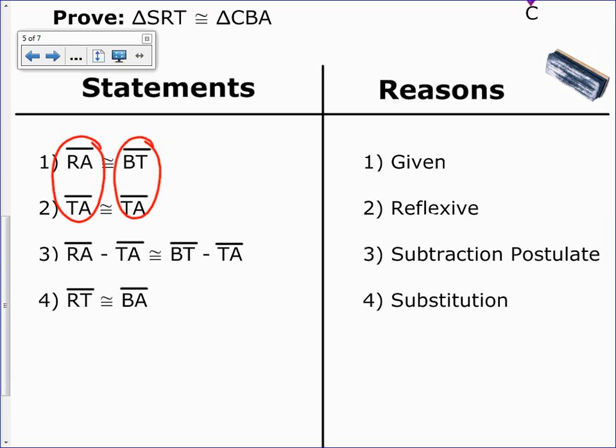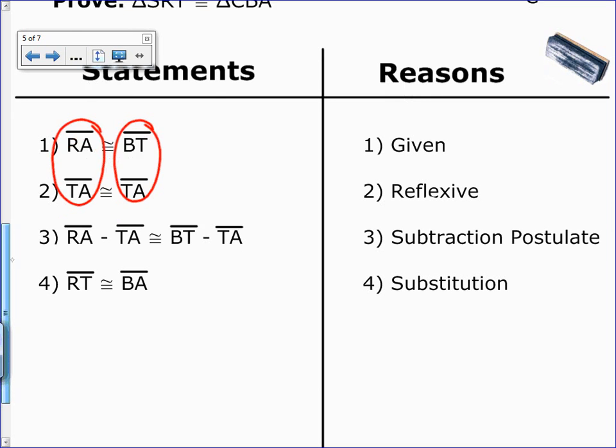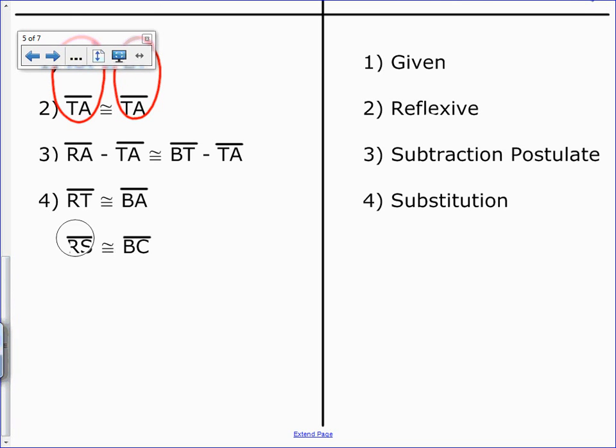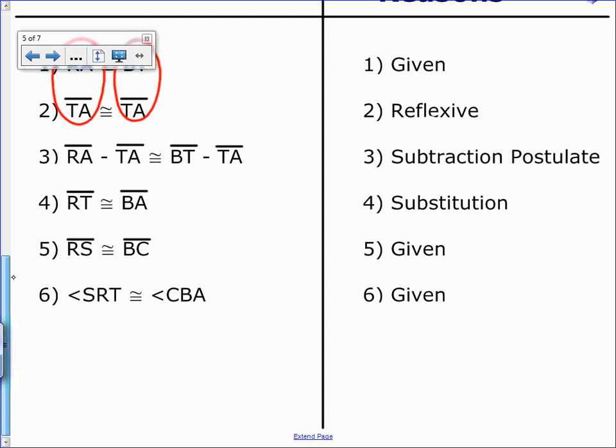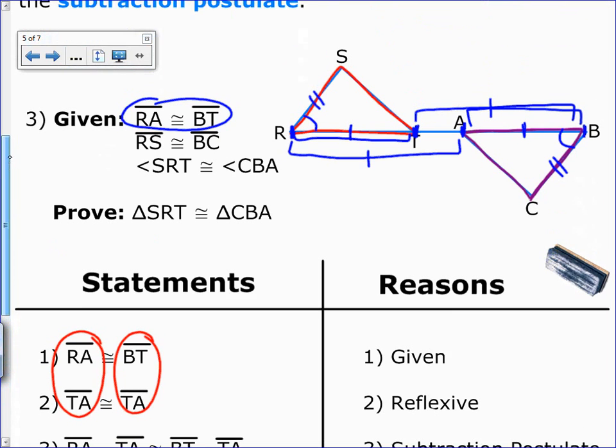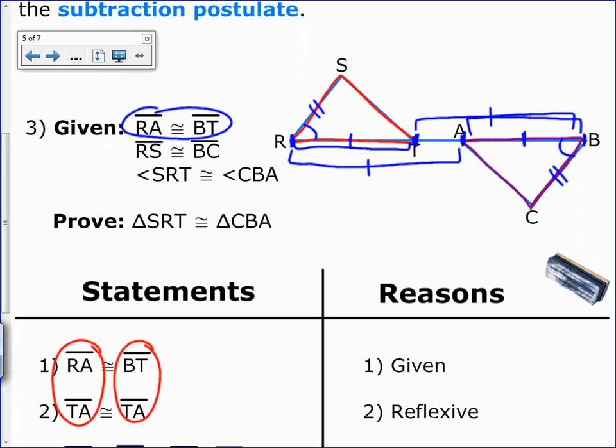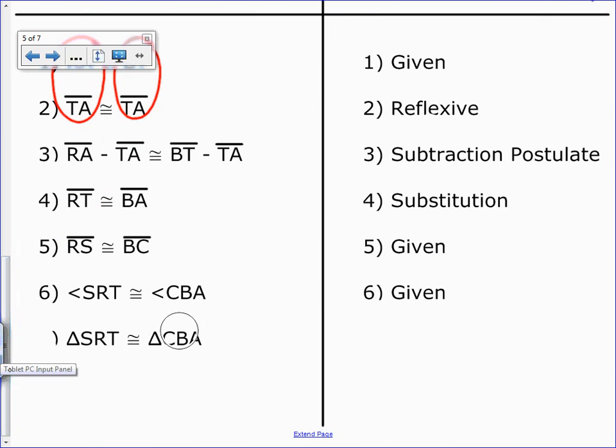After that, we're just stating our other givens. RS congruent to BC. That's given. And then angle SRT congruent to angle CBA. That's given as well. Let's just go back up here and figure out which method it would be. Side, angle, side. Side, angle, side. So we can go ahead and say the triangles are congruent by side, angle, side. And that's really the addition and subtraction postulates.